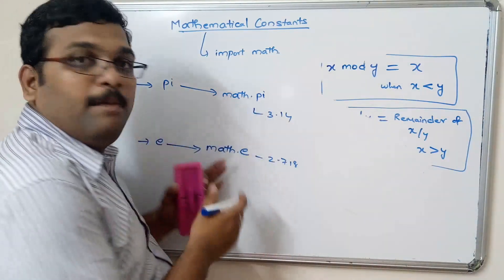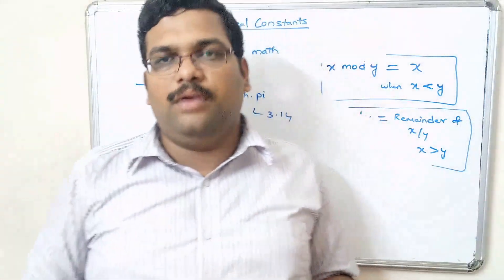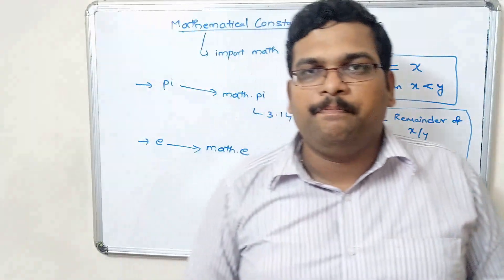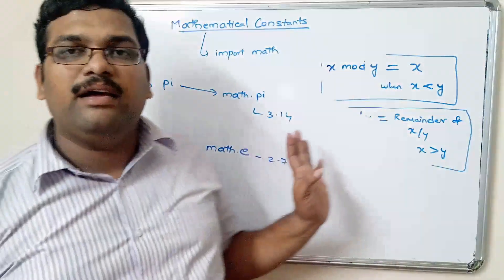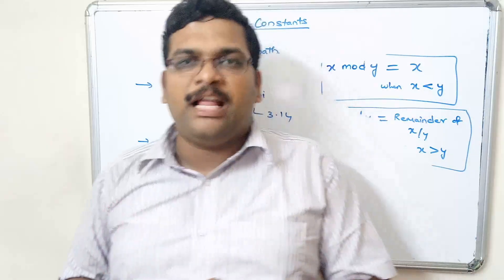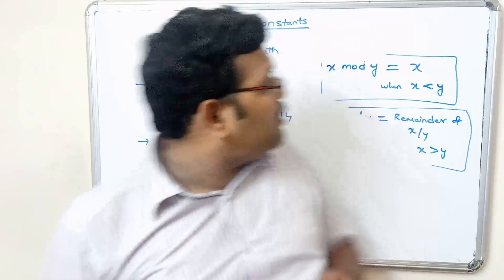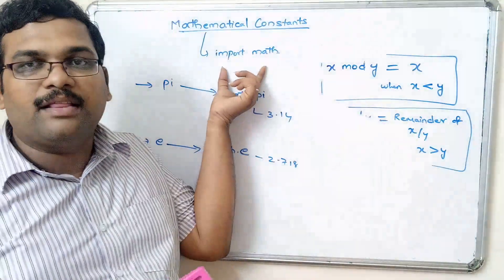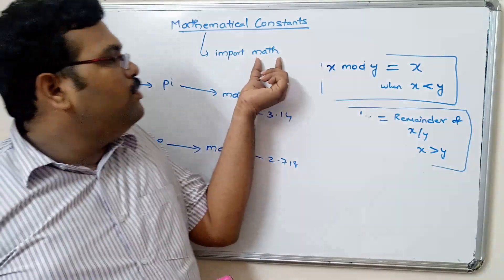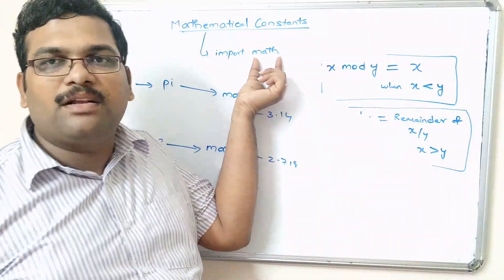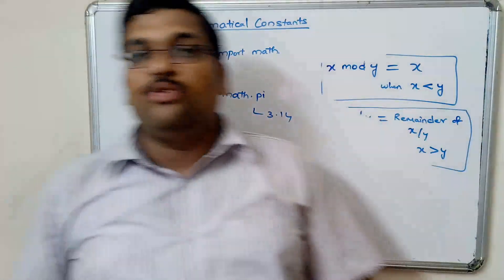So math.pi and math.e — these constants can be directly used in our expressions in Python programming. Only two constants: pi and the exponent. Whatever it may be — whether a mathematical function or a constant — we are supposed to use import math, and while implementing we have to use math as a prefix to that particular function or constant.